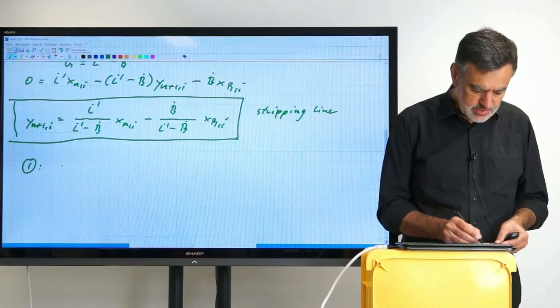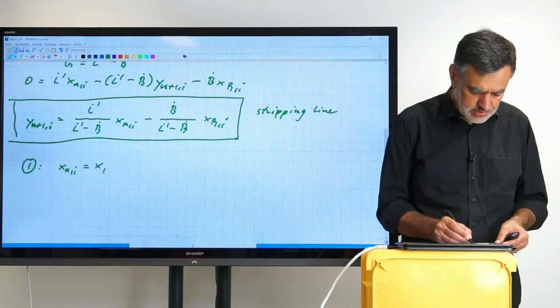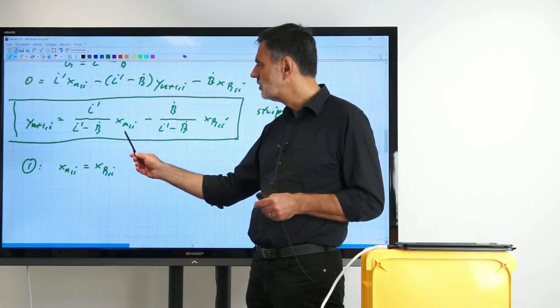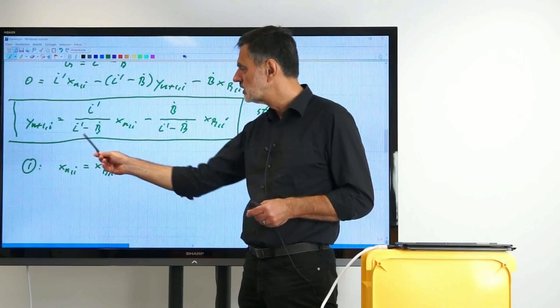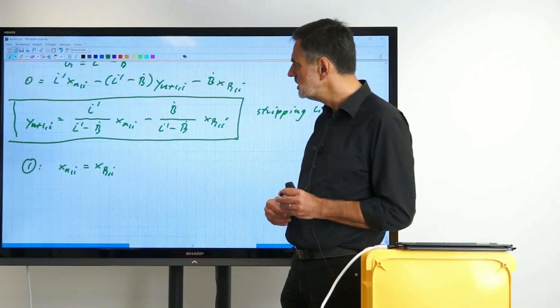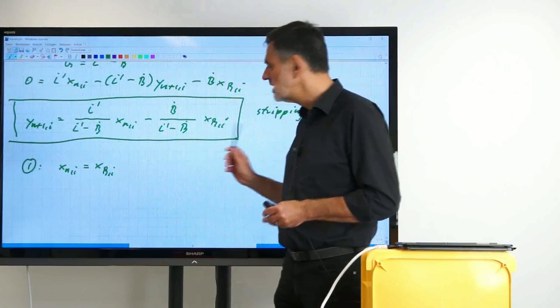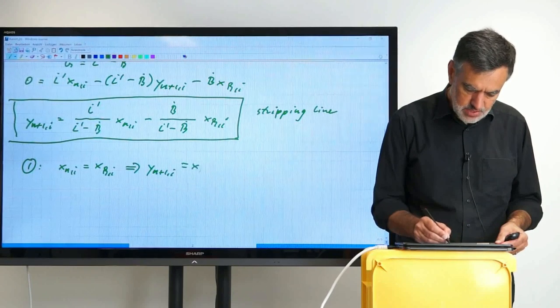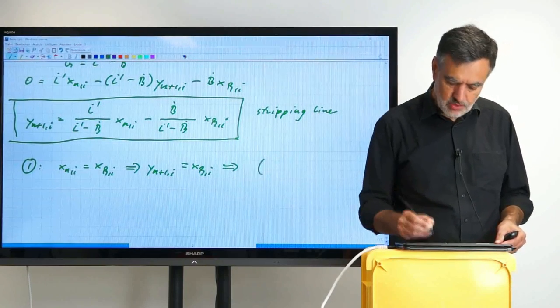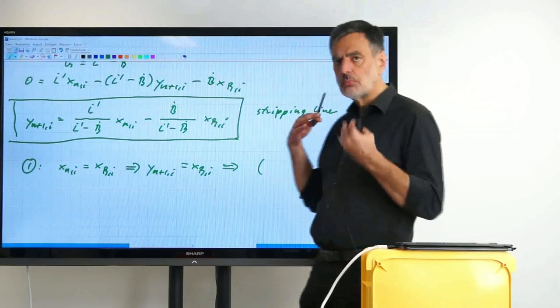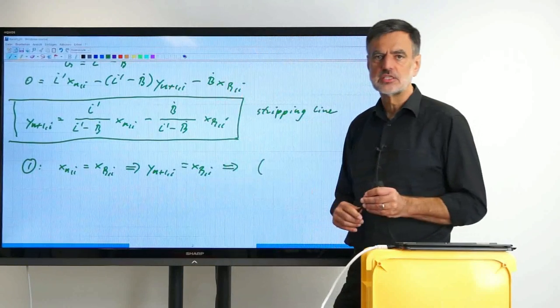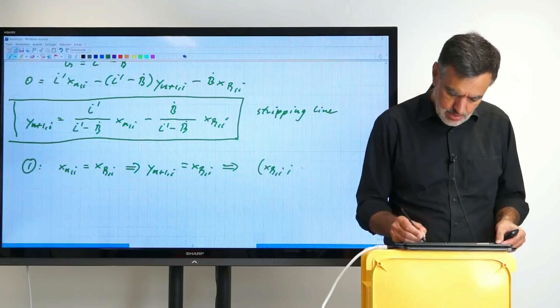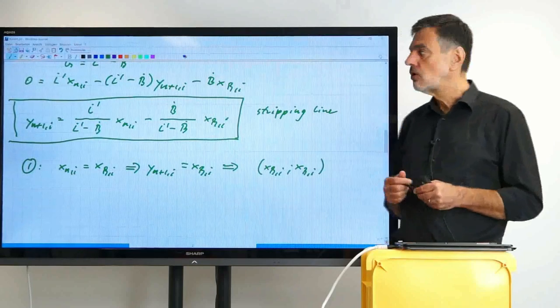We want to determine two points. What is the first point? We want to do the same thing as we have done before. For the rectifying section, we just said that the X_Ni was the product composition, which means in this case the X_Bi. If we substitute X_B for X_N, we can combine these two terms and would wind up with (L prime minus B) divided by (L prime minus B), which is exactly unity. So we wind up with Y_N+1,i equals X_Bi. From that follows that one of the points of the stripping line is where Y as well as X both are X_B. It's a point on the diagonal at X_B. So it's X_Bi, X_Bi. That is one point of the stripping line.